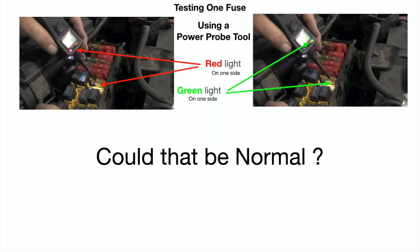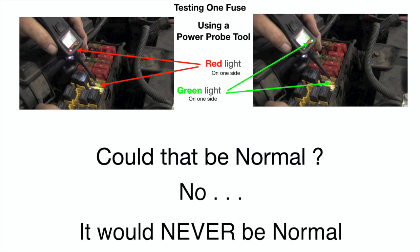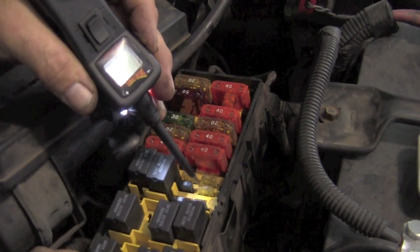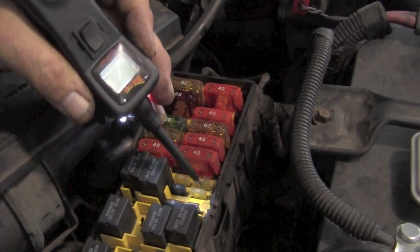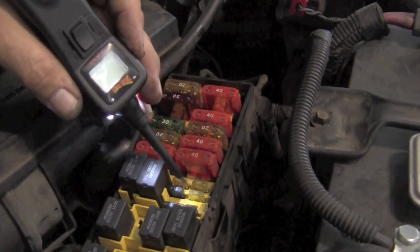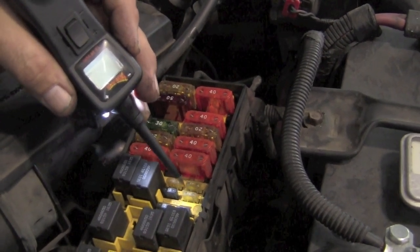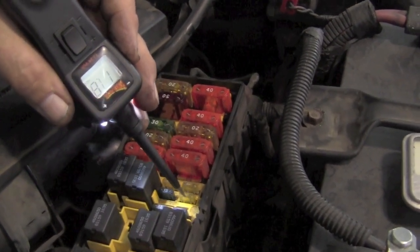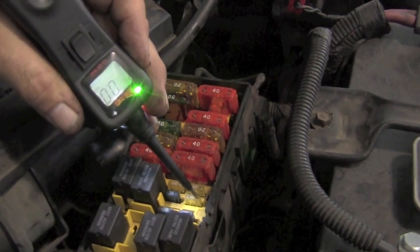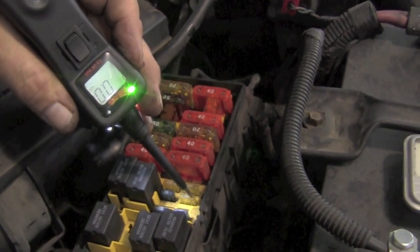On this fuse we got power and we got ground. Could that be normal? No, it would never be normal. On a fuse you should have the same reading — either power on both sides or ground on both sides, depending on whether it's a power or ground fuse. But in this case we have power on one side and ground on the other. That's an indication that the fuse is blown. Pretty basic, right? But being basic doesn't prove anything.